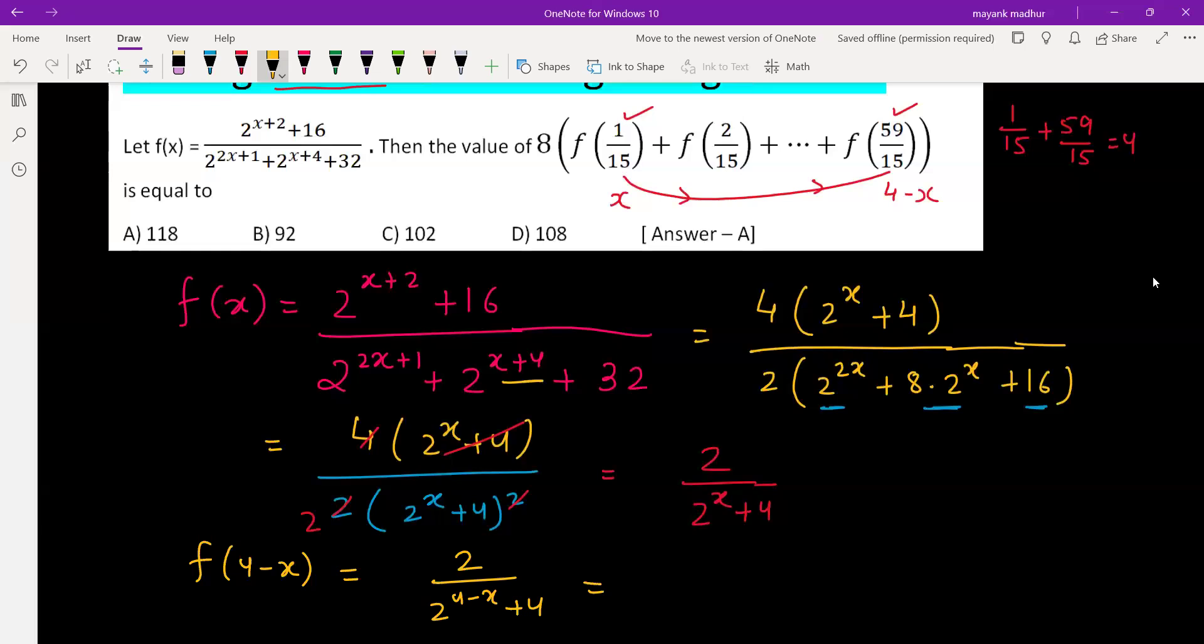Multiply by 2 raised to x, up and down. 2 into 2 raised to x divided by 2 raised to 4, which is 16, plus 4 into 2 raised to x.